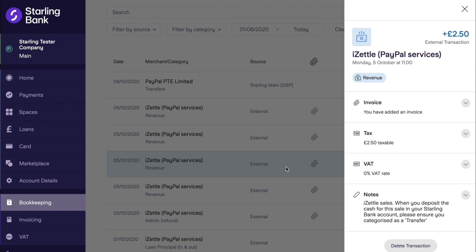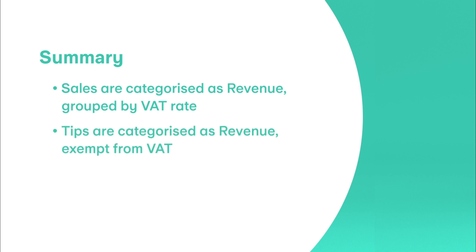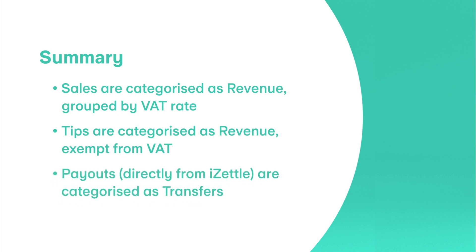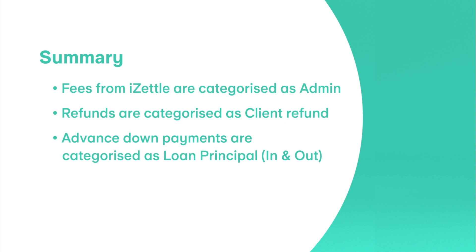Here is a summary of what the integration will do. Sales at various VAT rates will be automatically categorised as revenue and grouped daily by VAT rate. Tips are categorised as revenue but without a VAT rate. Payouts received from iZettle will be categorised as transfers to avoid double counting. An advance from iZettle will be automatically classed as loan principal. Fees for sales and an iZettle advance will be categorised as admin. Refunds will be categorised as client refund, and down payments on an iZettle advance will be categorised as loan principal. Other transaction types can be found in our FAQs.